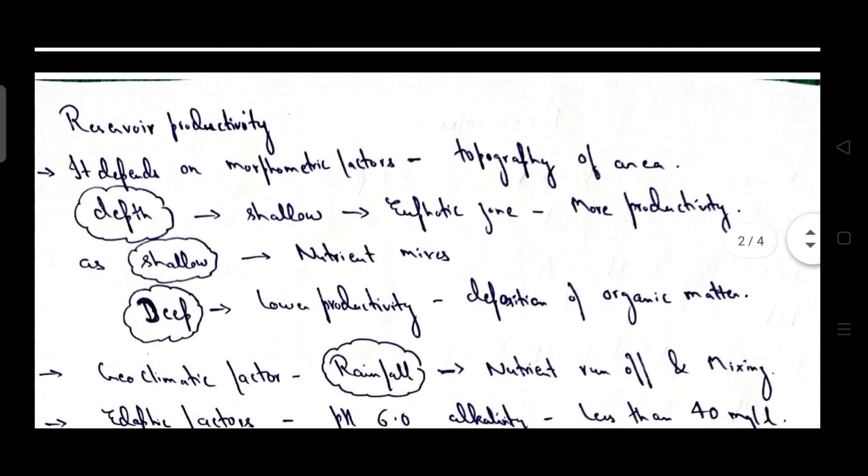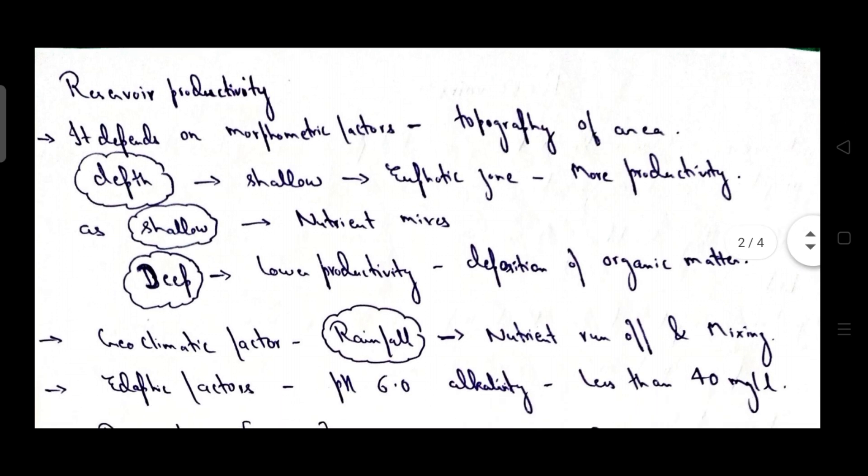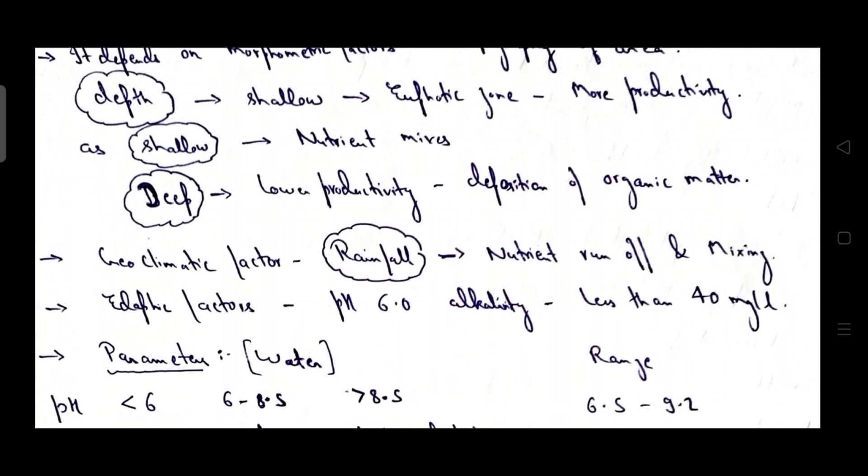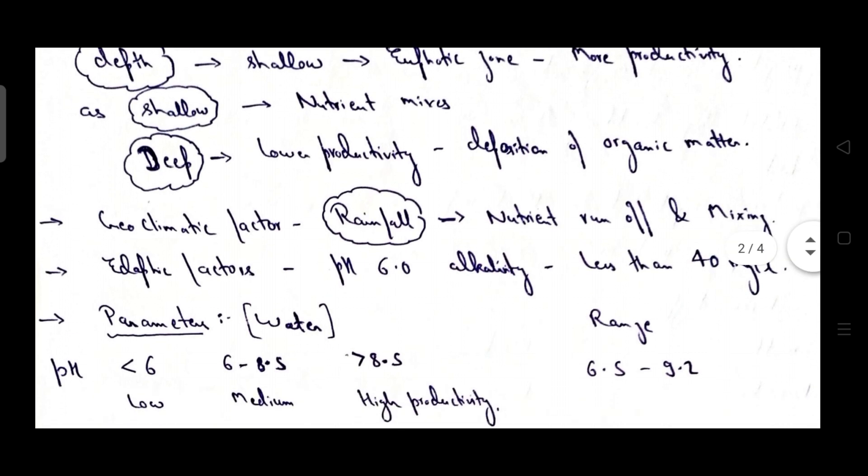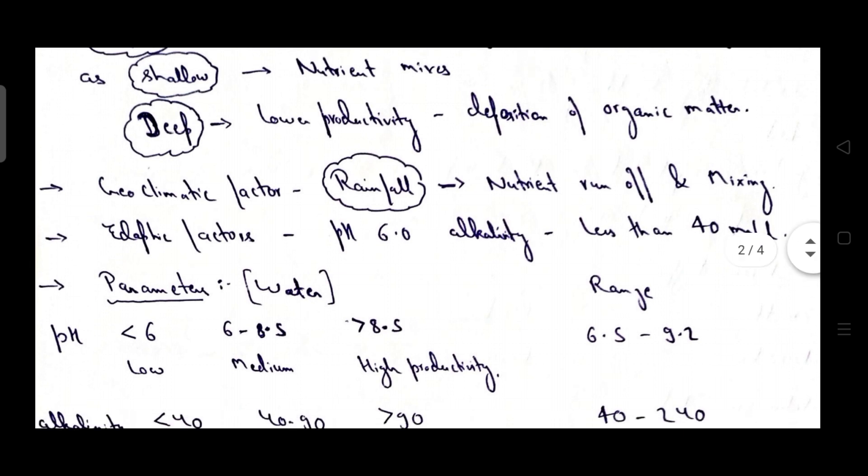Then coming to reservoir productivity. So first of all it depends on morphometry factors that is on topography of area, where it is located, from which type of river it is derived. So basically it matters with depth. Productivity of reservoir is inversely proportional to depth. The more the depth will be the lesser the productivity will be. The shallower the region will be the more nutrient the water will be from the reservoir and the more productivity of the reservoir will take place. Whereas in case of deep reservoir, lower productivity as there is huge deposition of organic matter.